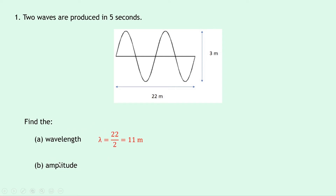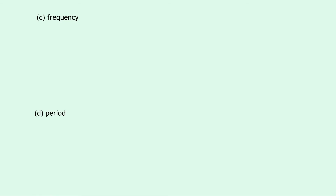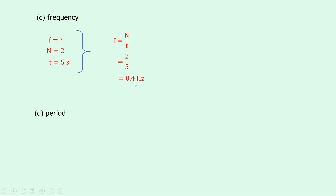Part B says to find the amplitude. Remember the amplitude of a wave is given by half the vertical height. So here my full vertical height is 3, so half the vertical height is 3 divided by 2, which gives 1.5 metres. For part C we're asked to find the frequency. Writing down what we know — frequency is unknown, number of waves is 2, and the time is 5 seconds. Writing down our equation F equals N over T, substituting in the numbers gives 2 divided by 5, which gives 0.4 hertz.